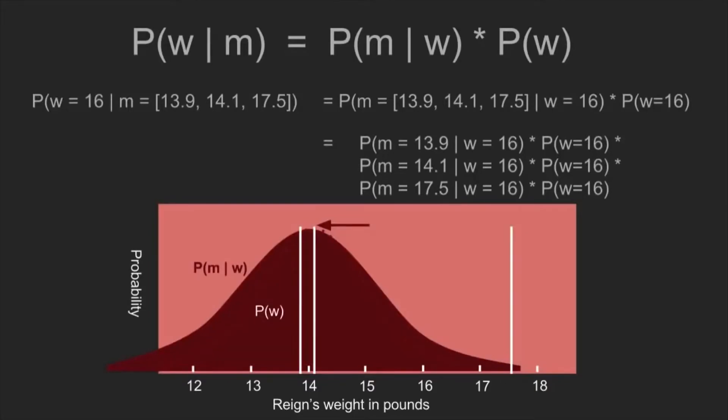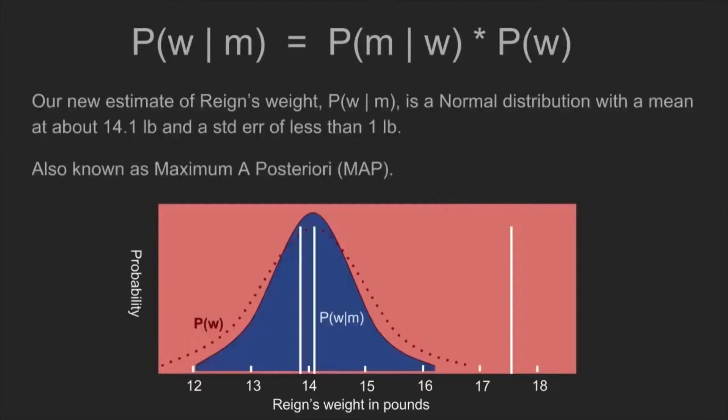And then by the time we're done, we tally up all of those and we get this new posterior distribution. It's normally distributed at about 14.1 pounds and it has a standard error of less than a pound. You'll notice it's even narrower than our original prior. So we've taken our original belief and we've been able to sharpen it up just a bit. And so incidentally, the peak of this curve is called the maximum a posteriori result. If we had to choose one value to represent our belief, that's not a bad one to choose.